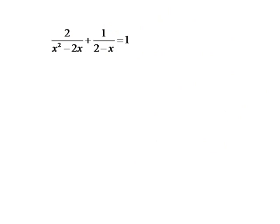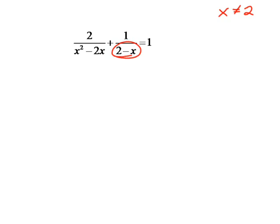They get a little bit more complicated. This is about as ugly as they're going to look for us. We want to start by doing our restrictions just like before. What makes x minus 2 equal 0? 2. So x cannot equal 2.